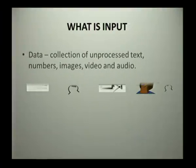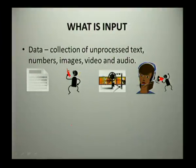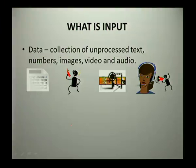Now, what is input? Remember, we spoke of data — we know data is raw. In terms of input, input can come in different types of data. This data is a collection of unprocessed text. It can be text, it can be numbers, it can be images, and it can be video or audio.